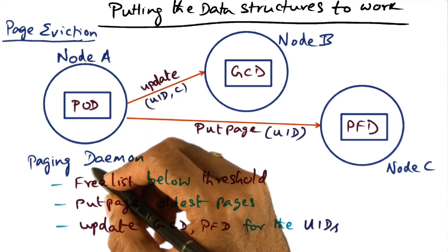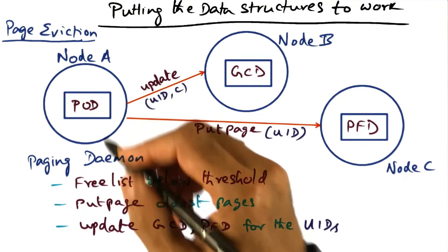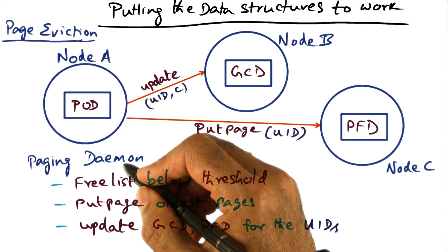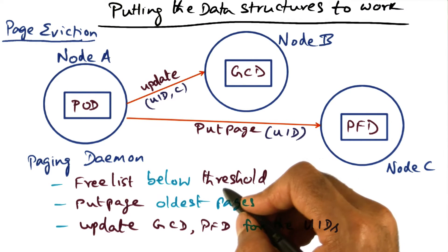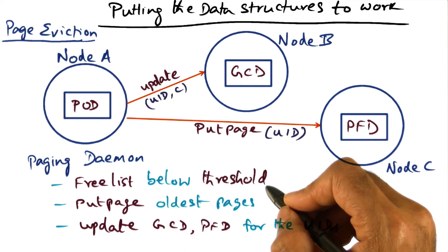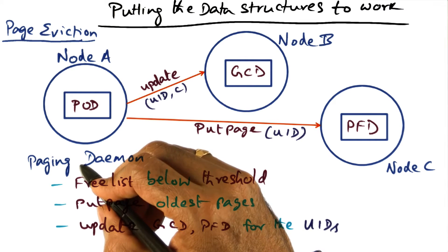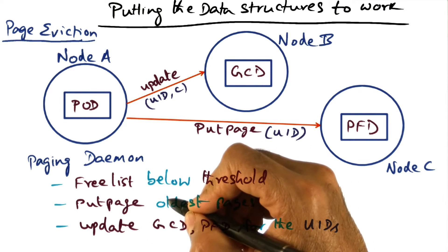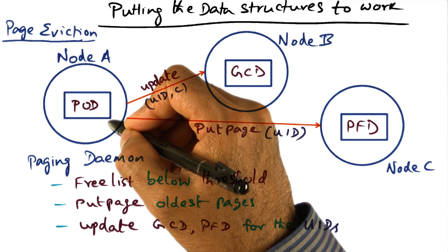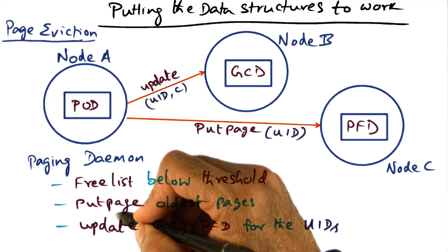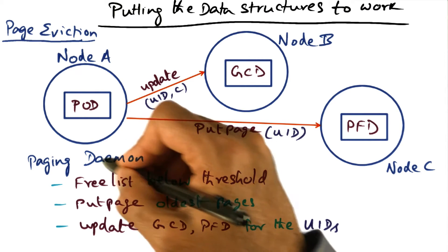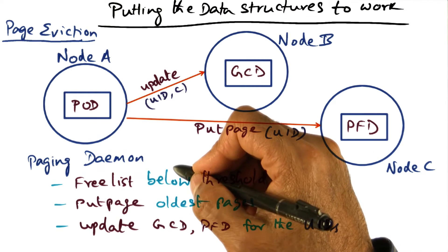As I mentioned earlier, the paging daemon in the virtual memory manager is integrated with the GMS system. What the paging daemon is going to do is, when the free list falls below a threshold, the paging daemon is going to do put_page of the oldest pages on this node. In the integration of GMS with the virtual memory manager, the paging daemon is also modified to work with GMS.